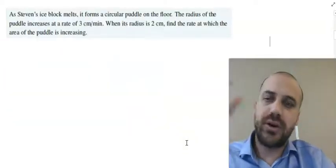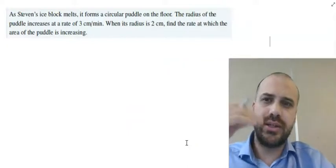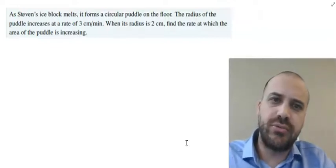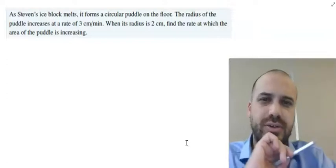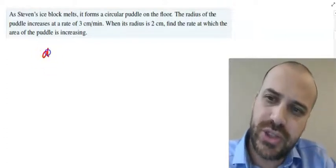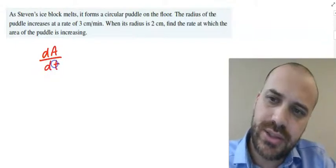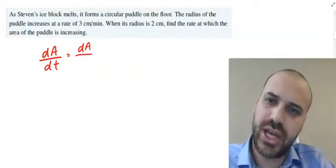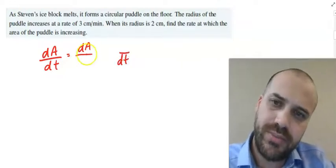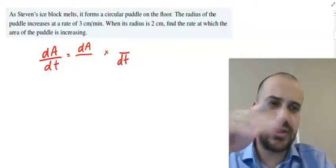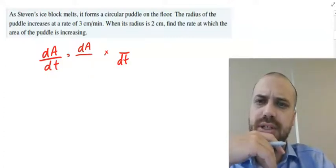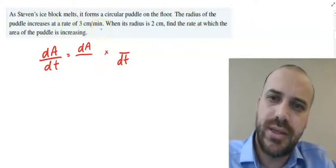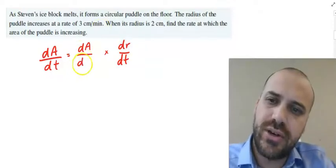Looking at the next question, I can see straight away it's a related rates question. It says 'when its radius is 2 centimetres, find the rate at which the area of the puddle is increasing.' So we're trying to find the rate of change of area with respect to time — that's dA/dt. The linking variable is the radius, since the radius of the puddle increases at a rate of 3 centimetres per minute. So we also have dA/dr and dr/dt.